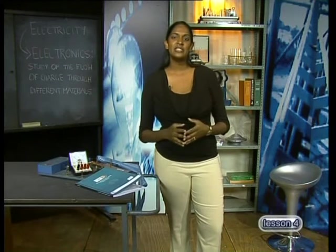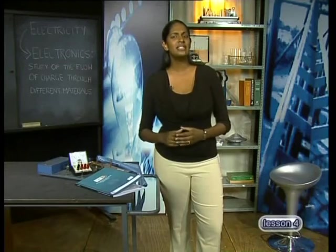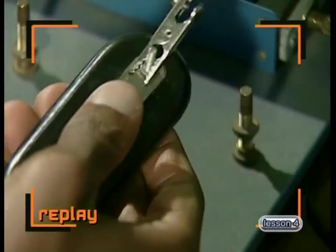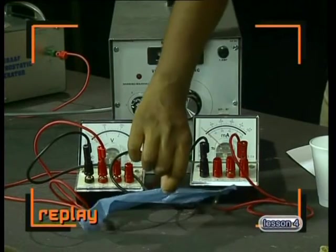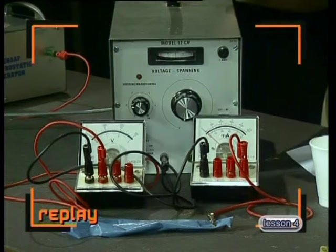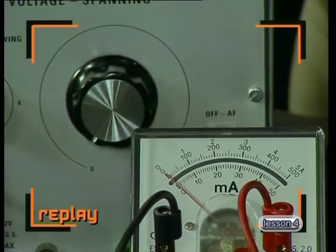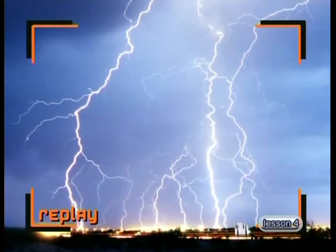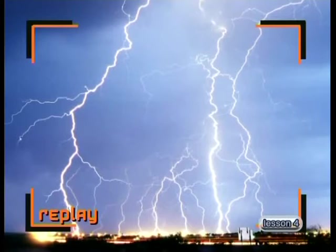In our previous lessons, we investigated what happened when we applied potential difference to the ends of different types of materials. We found that metals obey Ohm's law and are therefore classified as conductors. Plastic materials do not generally allow charge to move through them and do not obey Ohm's law — they are called insulators. When the potential difference applied across an insulator and the temperature are very high, the insulator may allow charge to move through it. This is called electrical breakdown.